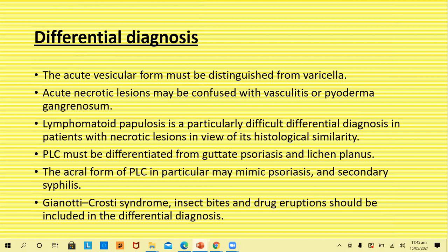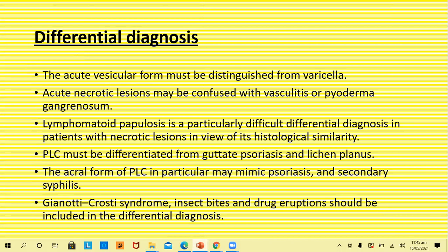Differential diagnosis: the acute vesicular form must be distinguished from chickenpox. Acute necrotic lesions are confused with vasculitis and pyoderma gangrenosum, especially if necrotic lesions are larger. Lymphomatoid papillosis is a particularly difficult differential in patients with necrotic lesions given histological similarities. PLC must be differentiated from guttate psoriasis, lichen planus, and pityriasis. The acral form of PLC may mimic psoriasis and secondary syphilis. Gianotti-Crosti syndrome, insect bites, and drug eruptions should also be included, although in none of these will there be necrotic lesions.